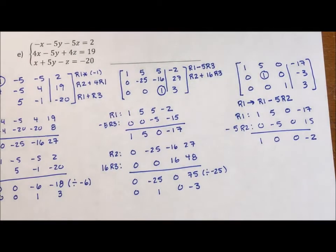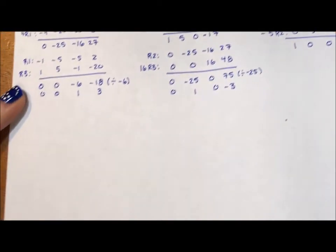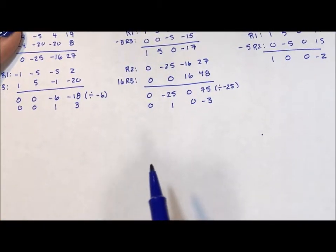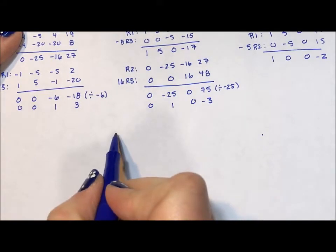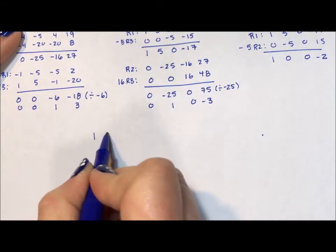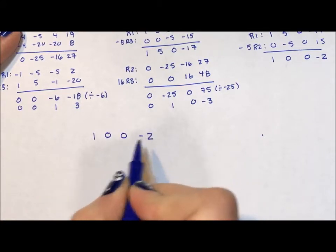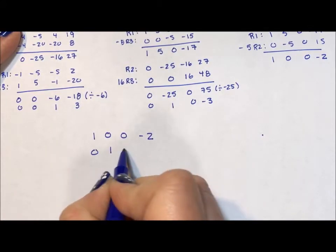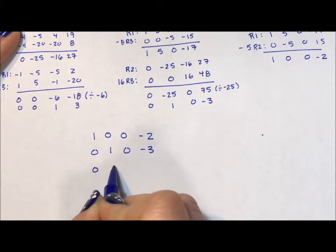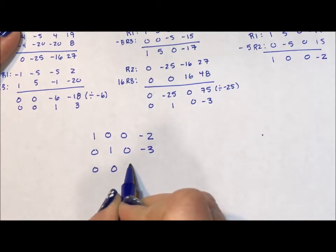I'm just going to drop the paper down a little bit. I'm going to put this all together so that my first row is now 1, 0, 0, -2. My second row is 0, 1, 0, -3. My last row is 0, 0, 1, 3.